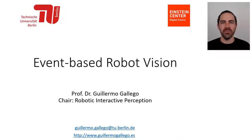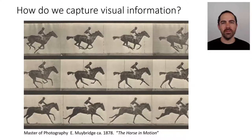Hello, my name is Guillermo Gallego and in this video we're going to take a look at two types of cameras: frame-based cameras and event-based cameras from a high-level point of view. It all starts with a question: how do we capture visual information? How do the cameras that we use for cinematography, the cameras we use to shoot movies or the cameras in our phones work to acquire content such as videos?